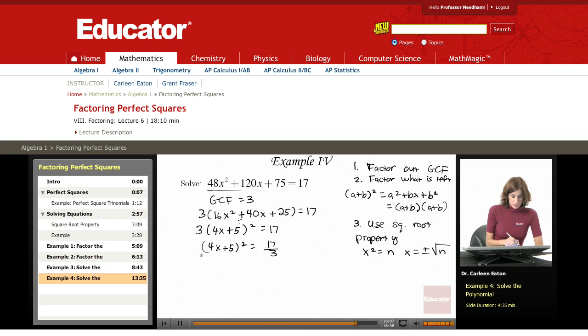Now, I'm going to take the square root of both sides. So the square root of something squared, of an expression squared, is just that expression. So I get 4x plus 5 equals plus the square root of 17 over 3 and minus the square root of 17 over 3.